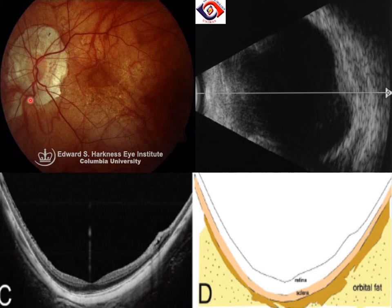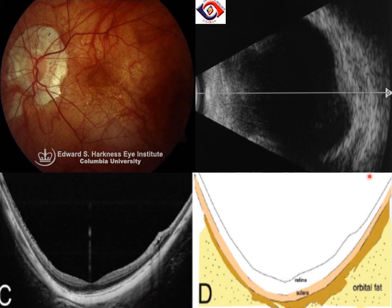Here we have what is called a posterior staphyloma. Staphylomas are abnormal pouching or out-pouching of the sclera, the white part of the eye. In very high myopia, when the sclera thins and expands further, it can no longer maintain its curvature, and an irregular, more oblong shape of the eyeball is formed. Posterior staphylomas can also be seen using a B-scan, where you can see the out-pouching clearly.